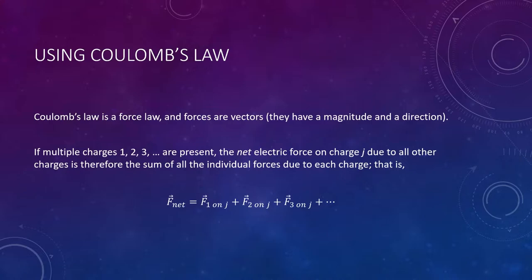As we saw throughout Physics 1, force is a vector. So the equation for this — say you have multiple charges, one through however many, in this case three — and you want to figure out how much force those three charges are exerting on some charge j altogether, the net force. The equation simply shows that you do a vector sum: add up each individual force value and get the total.